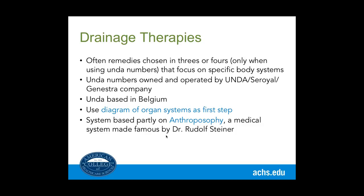One good difference with the type of drainage therapy I use is there are only 76 remedies. So instead of 3,000 or 10,000 or 100,000 with constitutional homeopathy, you've got 76 — which is still kind of daunting, but a lot better than 3,000. With those 76, you can still make almost infinite combinations and really treat anything. I want to be clear: I have no stake with Unda, Seroyal, or Genestra. It's not a company I own stock in or get paid by. I use their products. This is the company I use — there are other companies that make drainage therapies, but this is the system I was trained in and use.